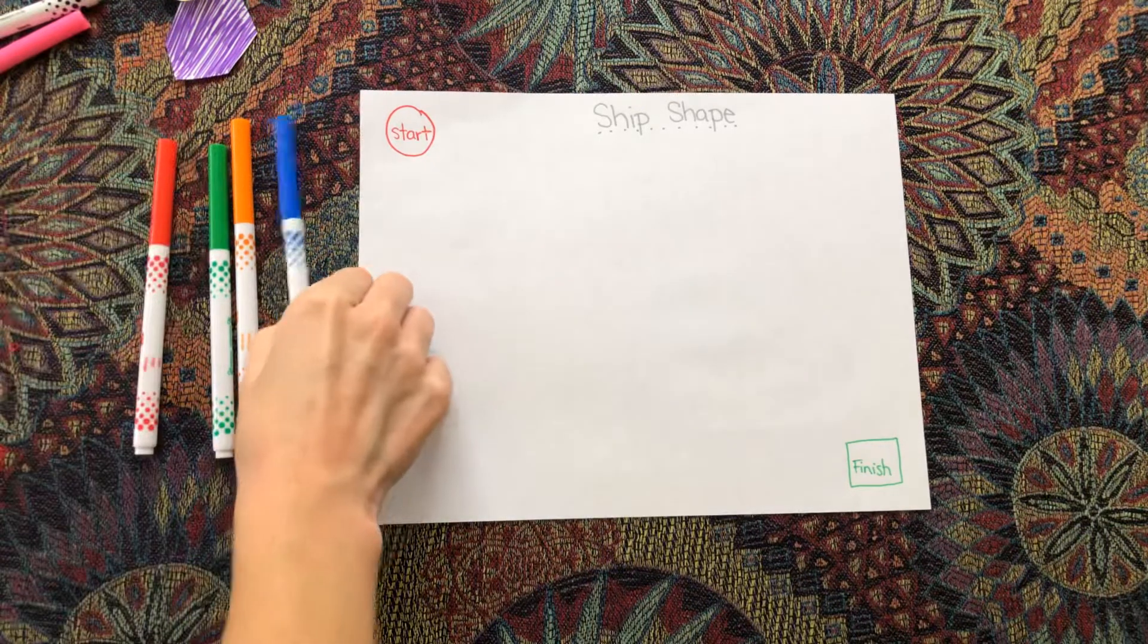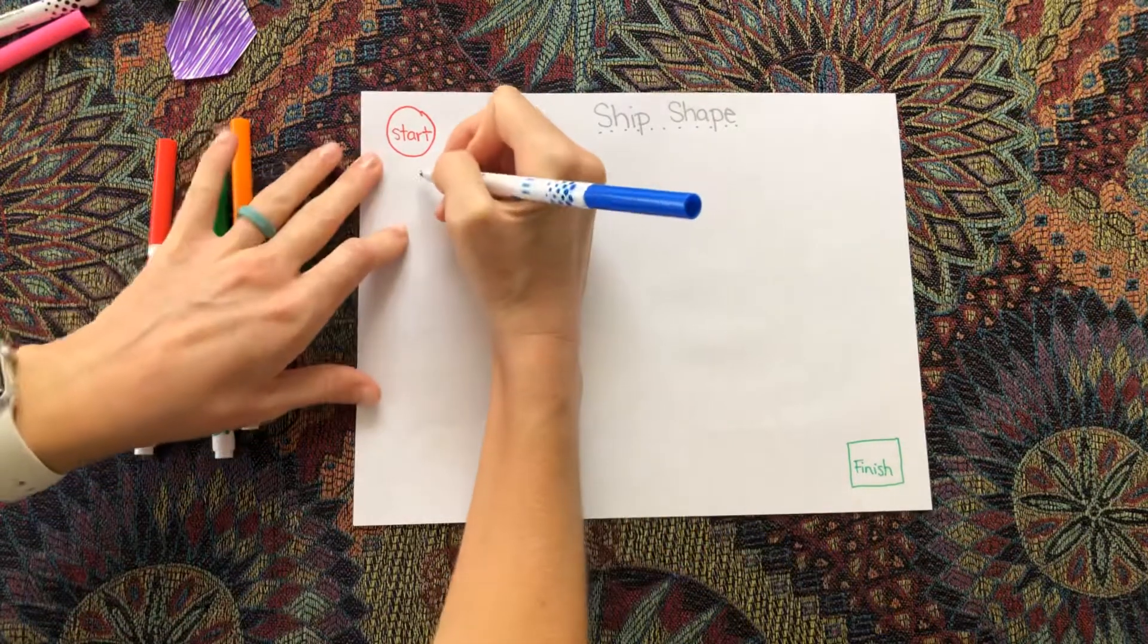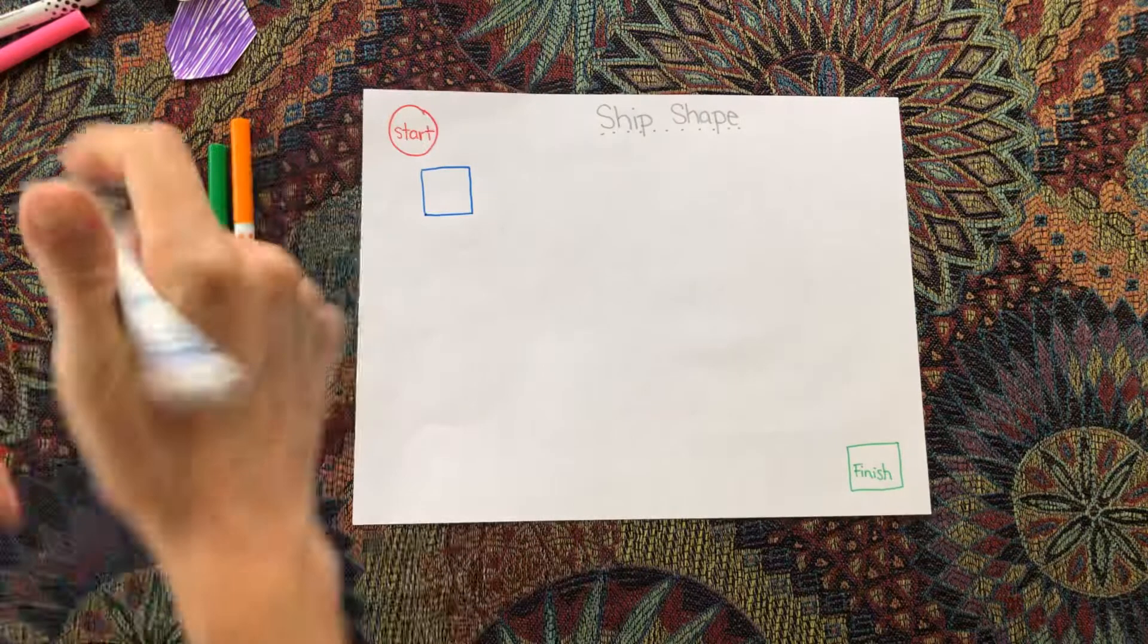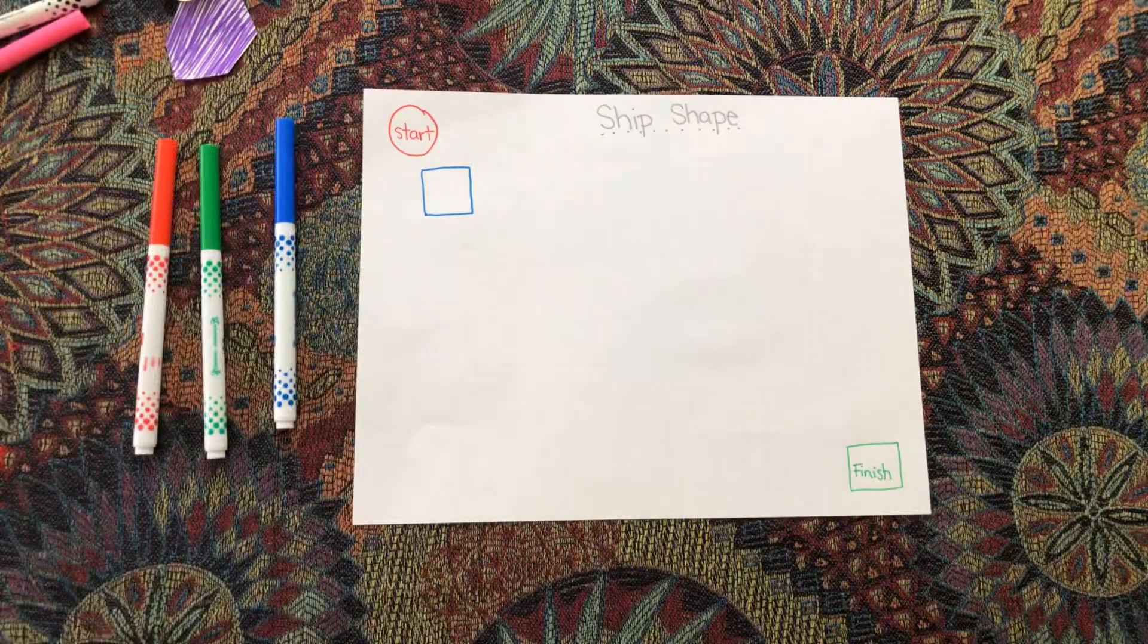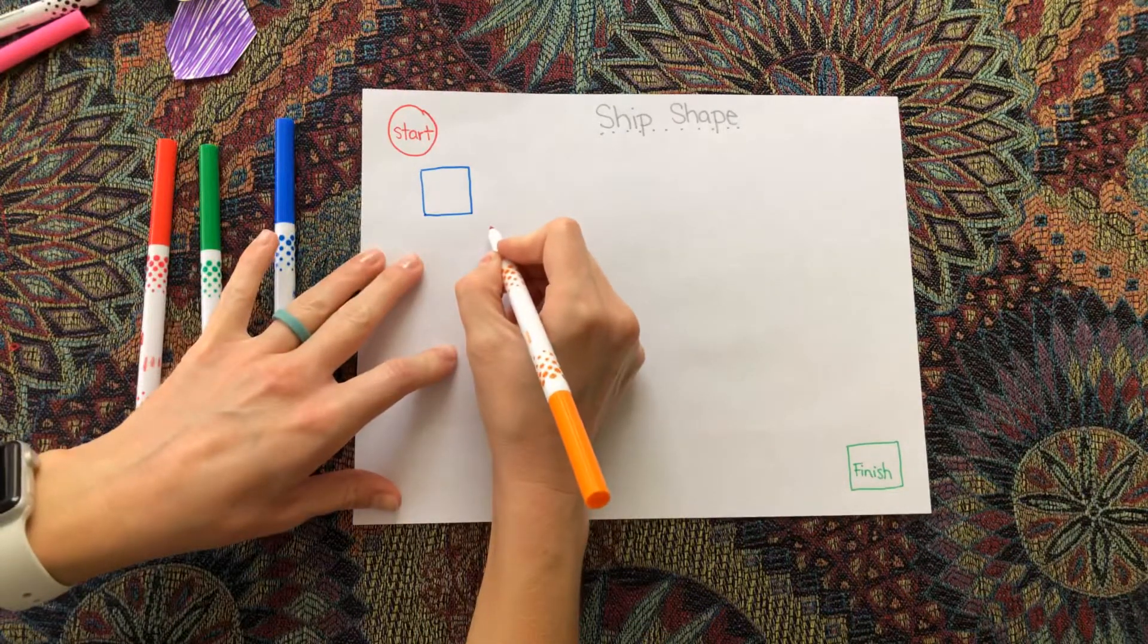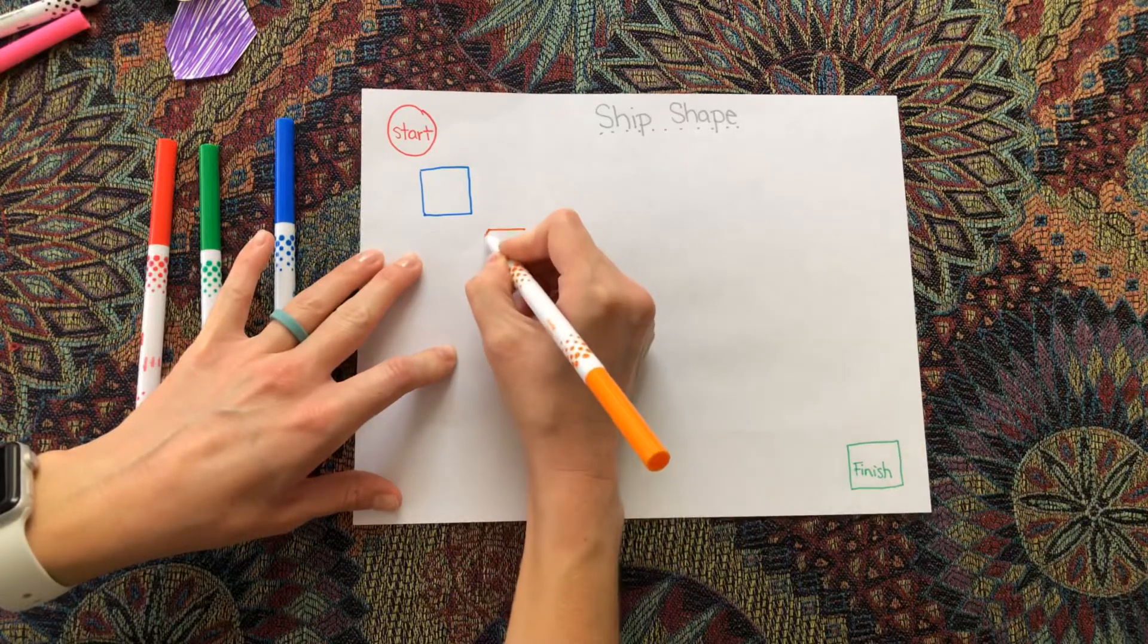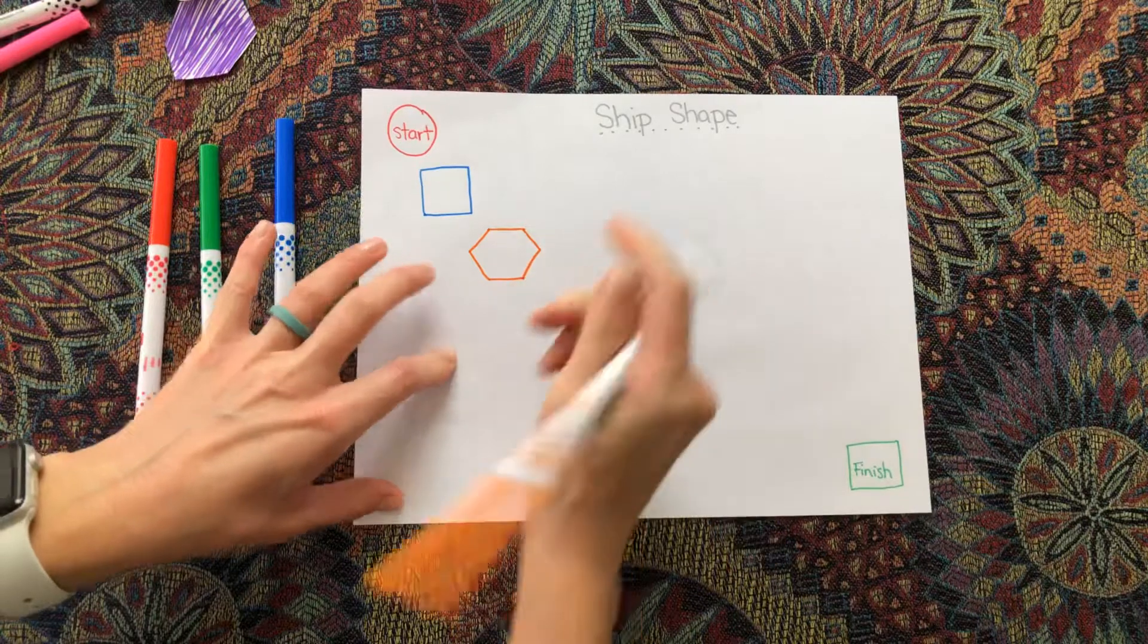Or just use red. Maybe I can make a pattern too. We'll see. Square. Hexagon. Hexagons are kind of hard to draw, so I'm going to just try my best. Oh, it turned out better than I thought.